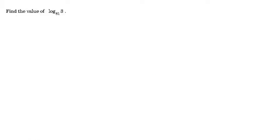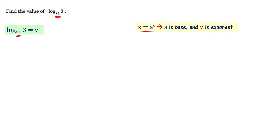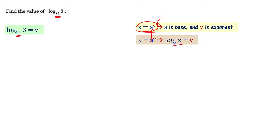Find the value of log of 3 to the base 81. Let us quickly recall some concepts relevant to this. If x equals a to the power y, that is the exponential form, then the logarithmic form is: log of x to the base a equals y.